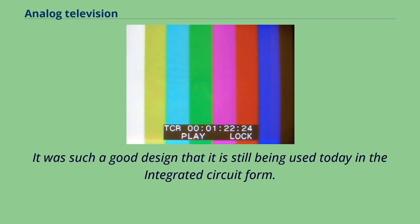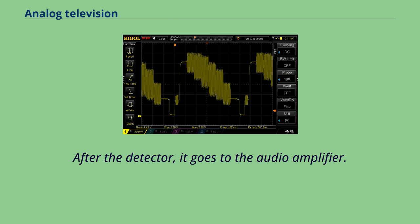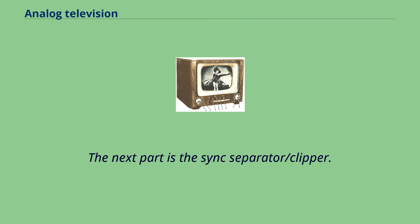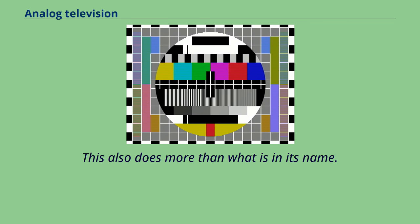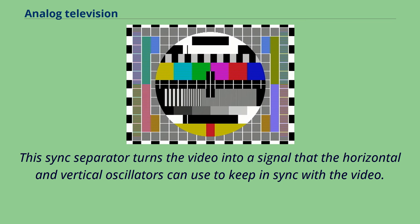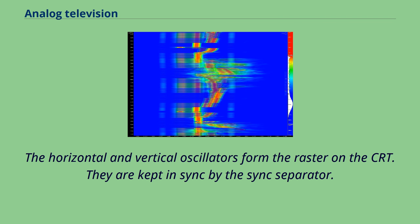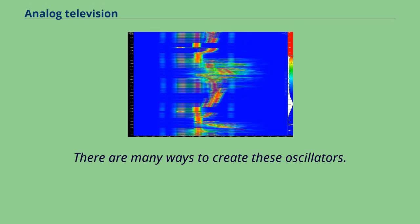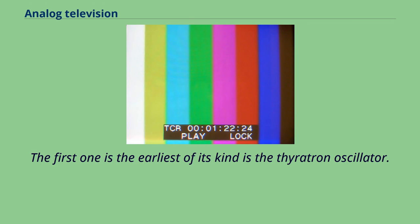There are many ways to create these oscillators. The first one is the earliest of its kind, the thyratron oscillator. Although it is known to drift, it makes a perfect sawtooth wave. The next oscillator is the blocking oscillator. It uses a transformer to create a sawtooth wave. This was only used for a brief time period.